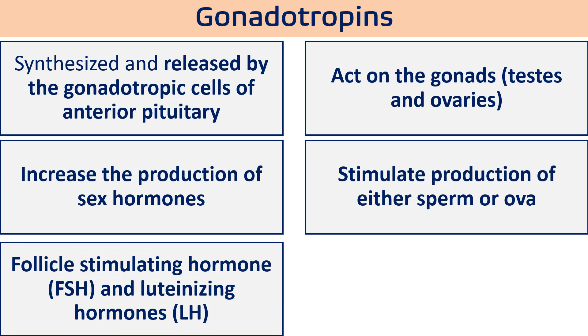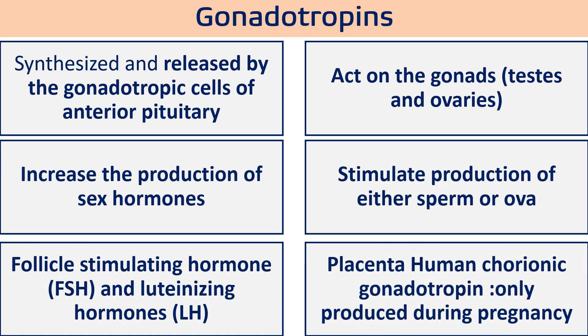The two important gonadotropins are follicle stimulating hormone (FSH) and luteinizing hormone (LH). There are also other gonadotropins, such as the placental hormone human chorionic gonadotropin (HCG), which is the only gonadotropin produced during pregnancy.